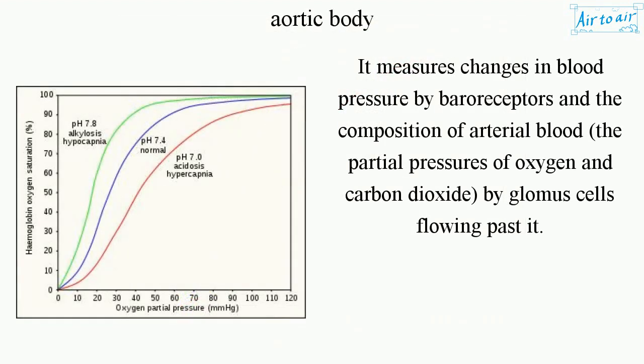It measures changes in blood pressure by baroreceptors and the composition of arterial blood — the partial pressures of oxygen and carbon dioxide — by glomus cells flowing past it.